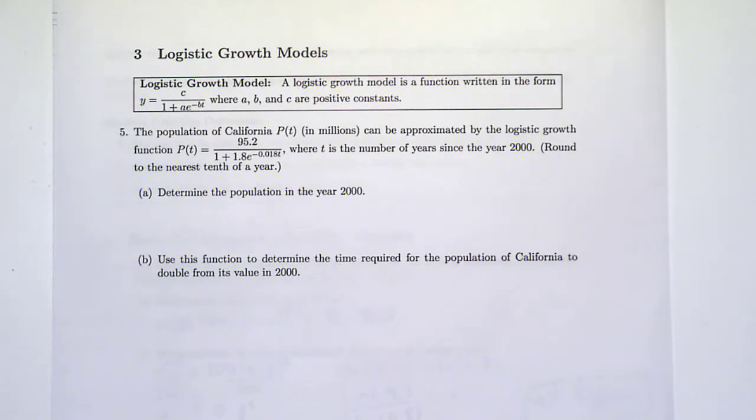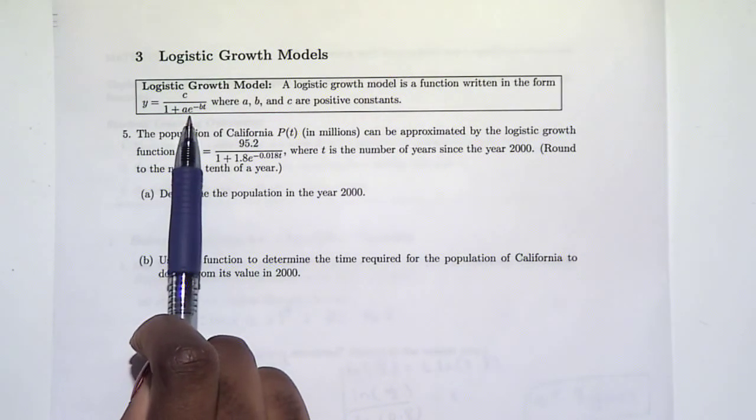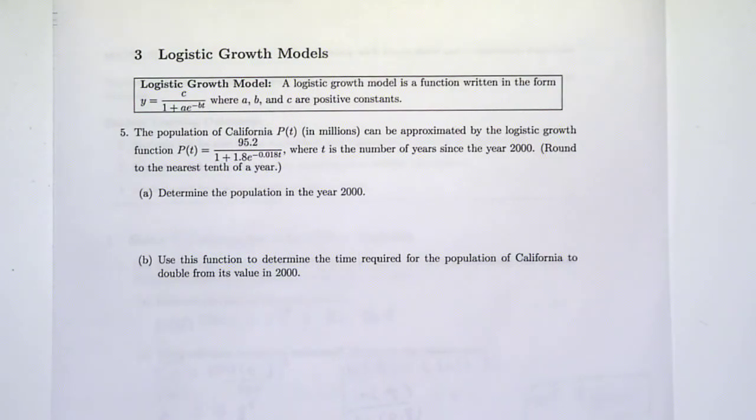The last section is on logistic growth models. You don't have to memorize this model, but you do need to be able to work with something that has this form. A logistic growth model is a function written as c over 1 plus a times e to the negative bt, where a, b, and c are positive constants. This can also be used to talk about population.